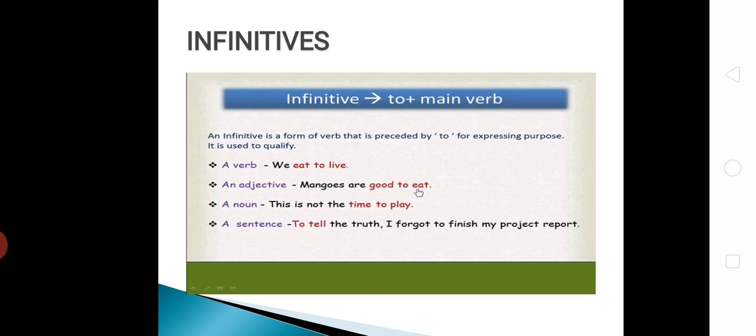Before every main verb we put 'to', then it will become infinitive. For example, a verb: we eat to live. After a verb, we can say that we eat to live. Another example, an adjective: mangoes are good to eat. After adjective, we have written 'to' and then main verb 'eat'.